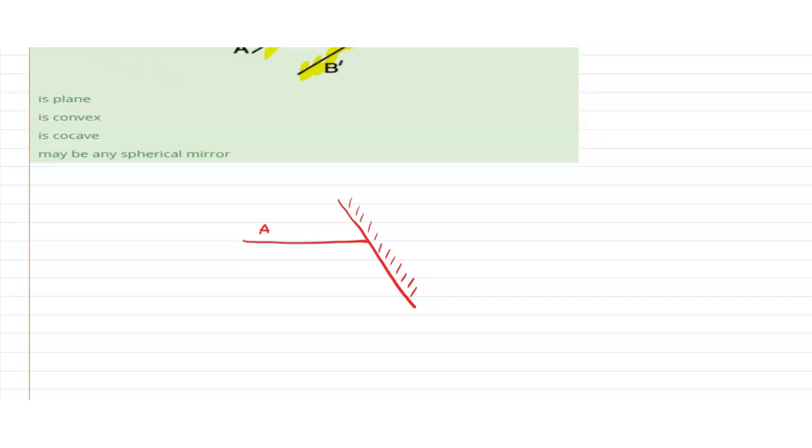Reflected back like this, and this is a normal. This is the incident i and this is r. This is another ray B and reflected back as B dash.